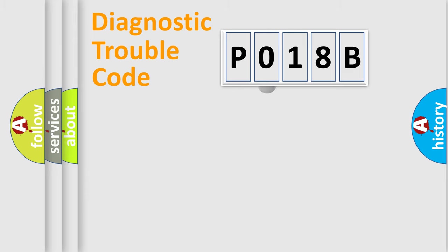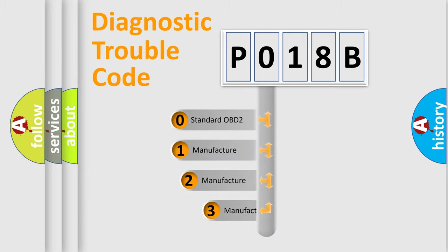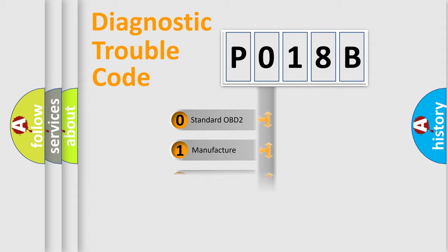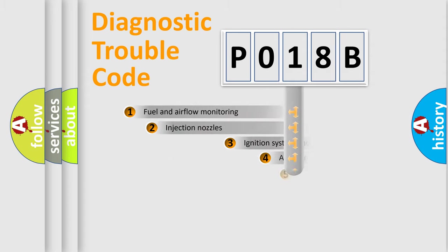This distribution is defined in the first character of the code. If the second character is expressed as zero, it is a standardized error. In the case of numbers one, two, or three, it is a more specific expression of a car-specific error.